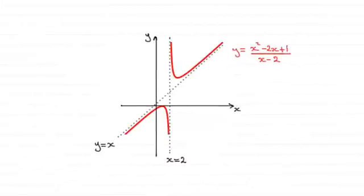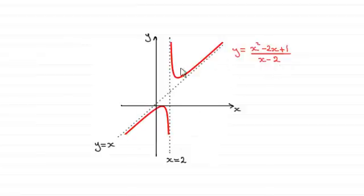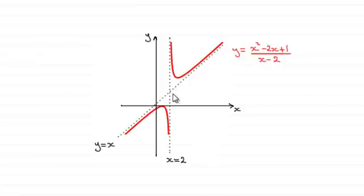Hi there. Now in this video, what I want to do is introduce you to asymptotes. So what do we mean by an asymptote? Well to demonstrate this, I've got this graph here, the graph of y equals x squared minus 2x plus 1, all divided by x minus 2. Now this graph looks like this, but you'll notice that the curve approaches two lines — the line x equals 2 and the line y equals x — and these are called asymptotes. An asymptote is a line where the curve approaches it but never crosses it. And in this graph we've just got two asymptotes, one vertical one and one sloping one.